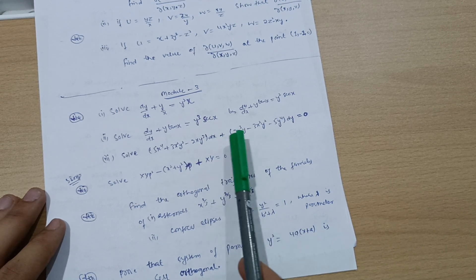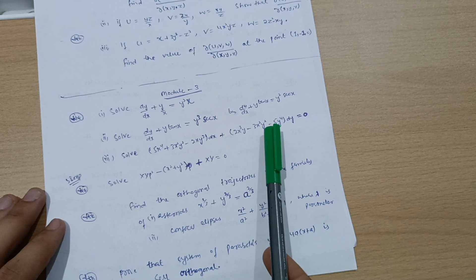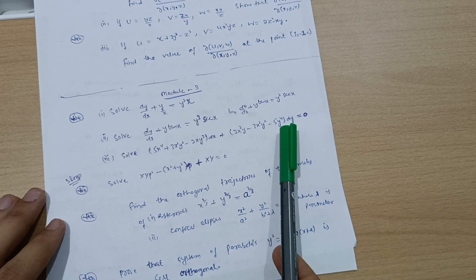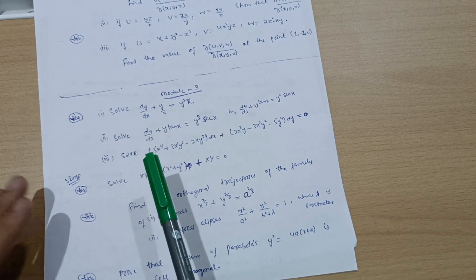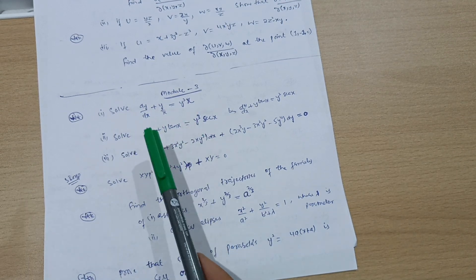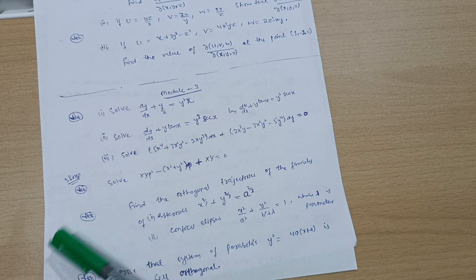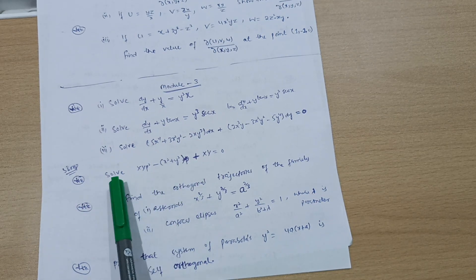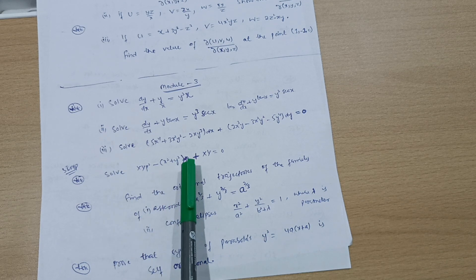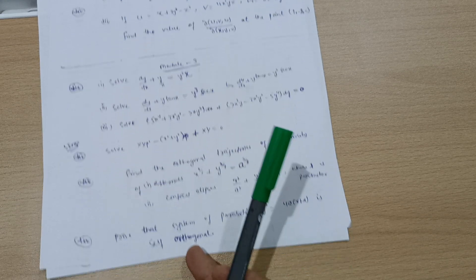Solve 5x to the power 4 plus 3x squared y squared minus 2xy cubed dx plus 2x cubed y minus 3x squared y squared minus 5y to the power 4 into dy equals zero. Solve some two problems also apart from these three questions from this question paper. Next is super important one which is frequently asked in examinations.